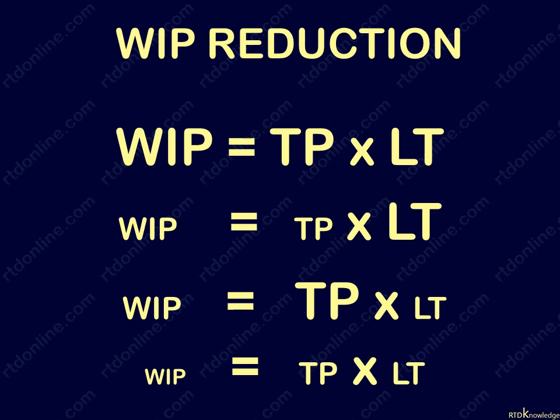The choice depends on your other goals and which is easier to reduce. In general, lead time is the harder of the two to reduce. If your process is currently overproducing, all you have to do is reduce the throughput rate to match takt time, thereby cutting work in process. If your current throughput rate is already sufficient to meet demand and you don't want to change production, you must cut lead time to reduce work in process.